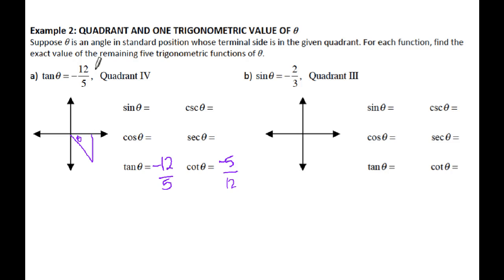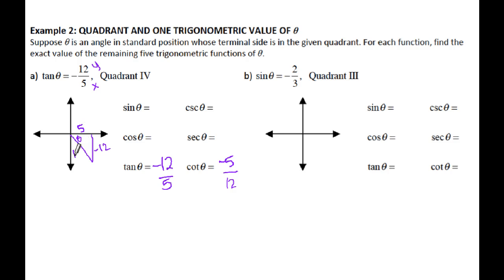Tangent is the same thing as y over x, or opposite over adjacent. So my y is 12 and my x is 5. One of these is going to have to be negative because you have negative 12 fifths. Since we're in the fourth quadrant, x is positive and y is negative. Using the Pythagorean theorem, your hypotenuse ends up being 13. From there you can set up all of your other ratios.